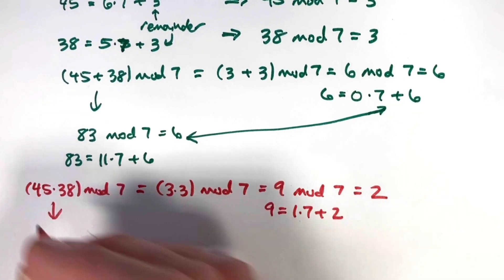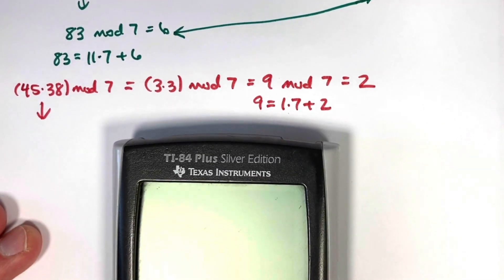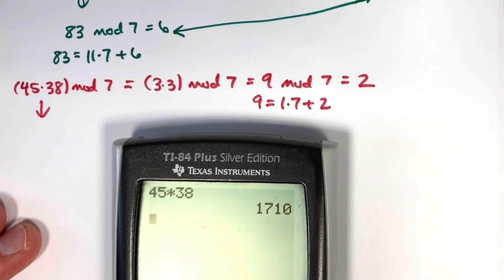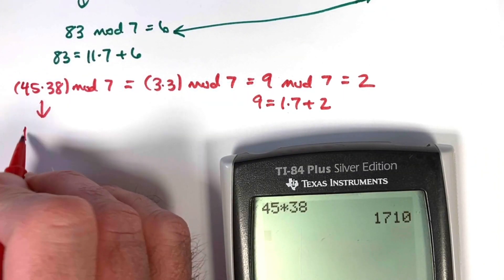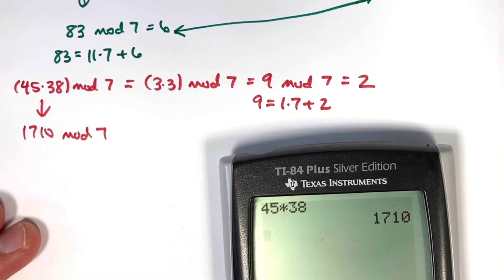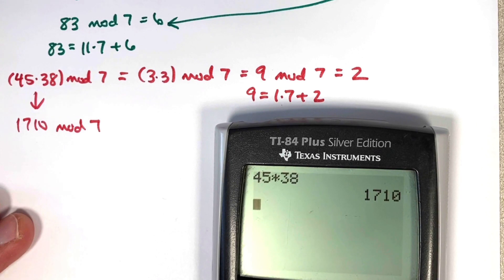Does this work the other way? Well, let's use our calculator to help us here. What is 45 times 38? It's 1,710. Evidently, when I divide 1,710 by 7, I should get a remainder of 2. Let's divide this by 7.